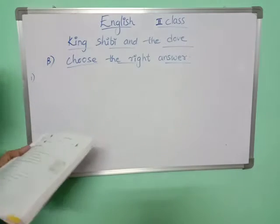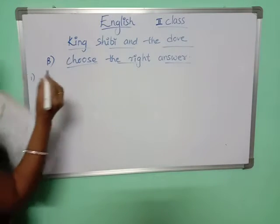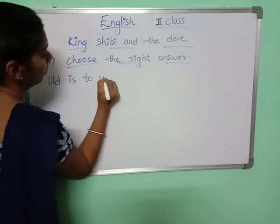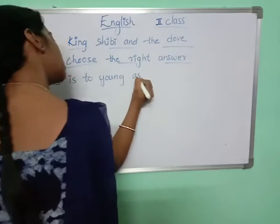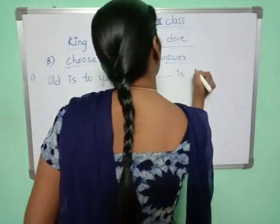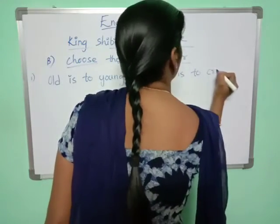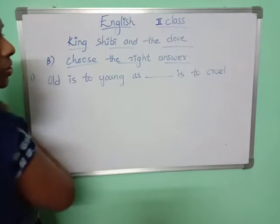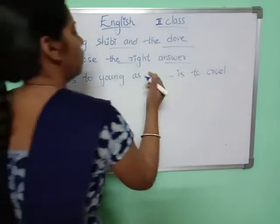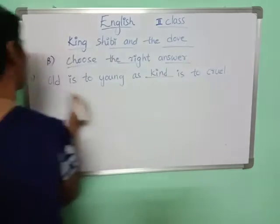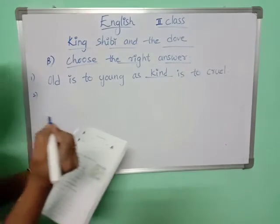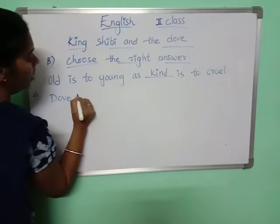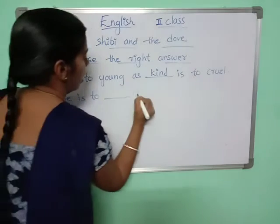First one: old is to young as dash is to cruel. Old is the opposite of young, so what is the opposite of cruel? Kind. Second: dove is to dash as...